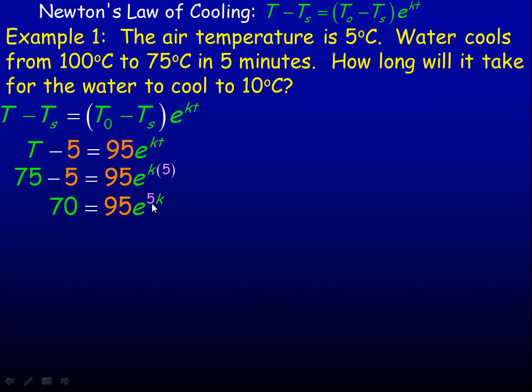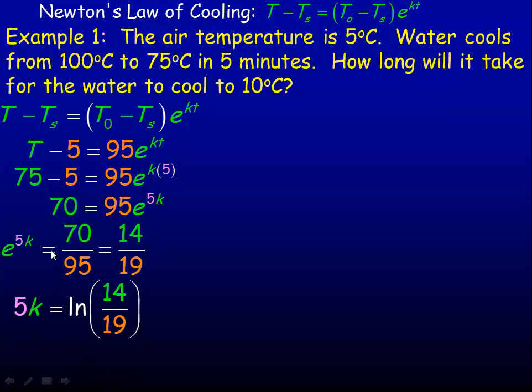I want to solve for K, so I'll divide by 95. So e to the 5K equals 70 over 95, which reduces to 14/19. To solve this exponential equation, I'll use natural logarithms.